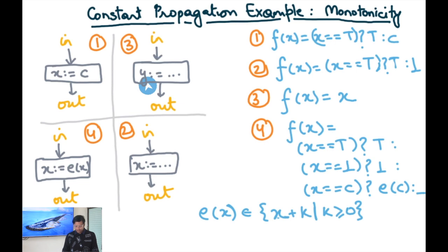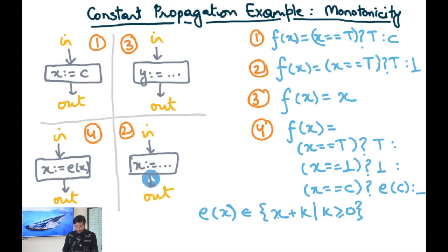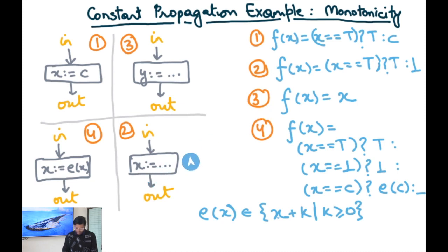For the case where x is not assigned to, we use the identity transfer function: f(x) equals x, so the output is just a copy of the input. For the case where x is assigned to something that is not a constant and not purely a function of x — such as x := y + z — if the input value is top then the output is top, otherwise the output is bottom.